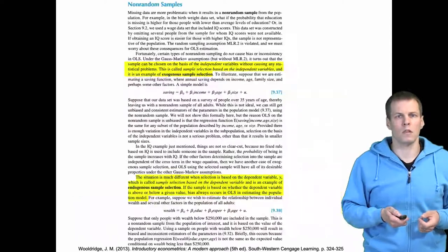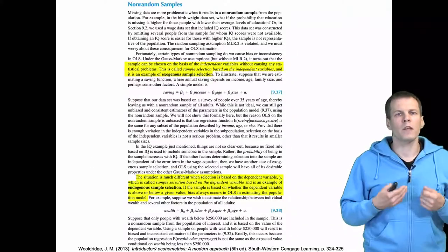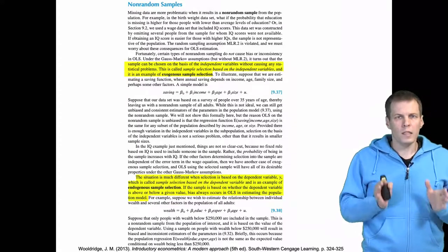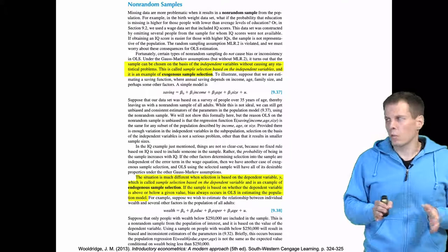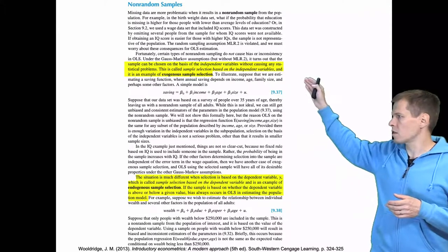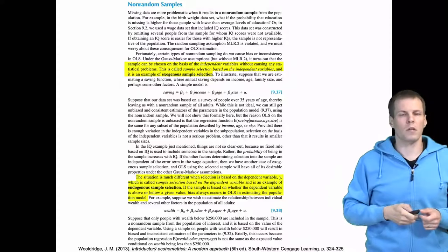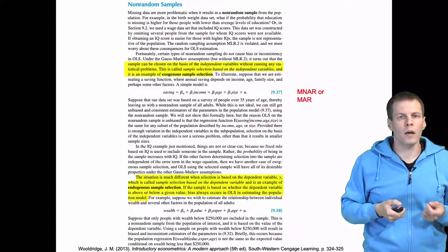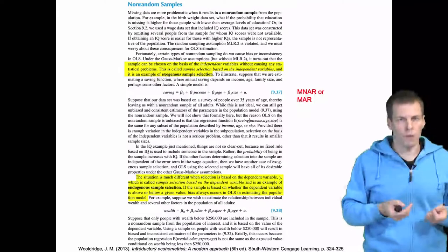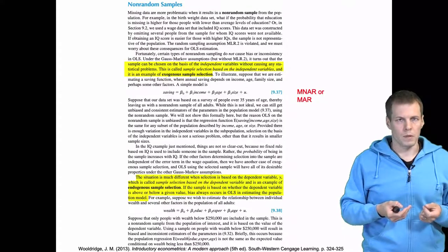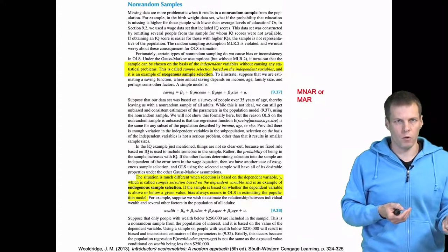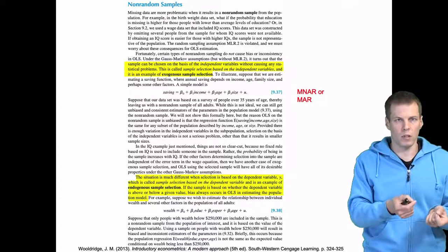So what are the consequences then? Woolridge further explains that the consequences depend on what the missingness depends on. We have to understand both scenarios: exogenous sample selection and endogenous sample selection, which refer to either missing not at random or missing at random mechanisms.